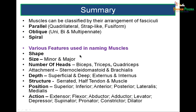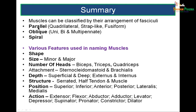To summarize: we talked about classifying muscles based on their fascicular arrangement — parallel, oblique, or spiral — and naming of muscles based on their shape, size, number of heads, attachment, how deep they lie, structure, position, and the actions they produce.